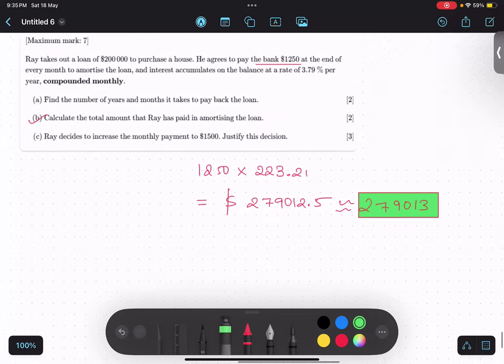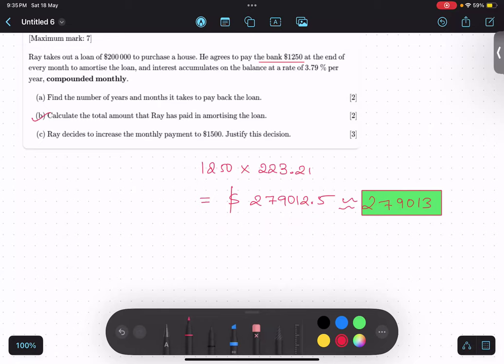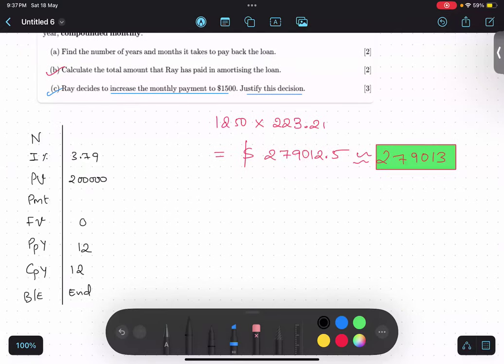Now, third part. So, third part. Ray decide to increase the monthly payment to this. Justify the decision. So, should he do this decision or not? So, we have to first of all calculate how much time it will take to finish the payment. Can you quickly calculate how much time it will take using GDC? Same table thing.